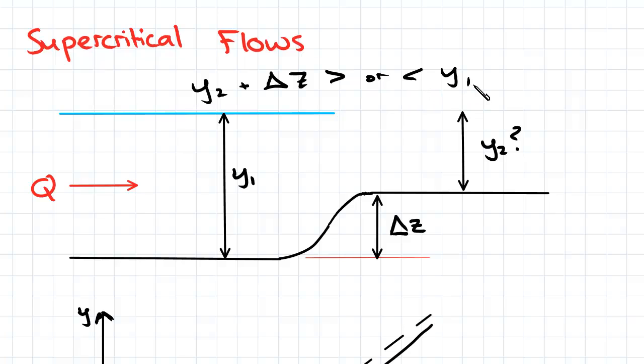Your intuition may tell you that the water surface would rise so that y2 plus delta z was greater than y1, but we'll see that this is true only some of the time.